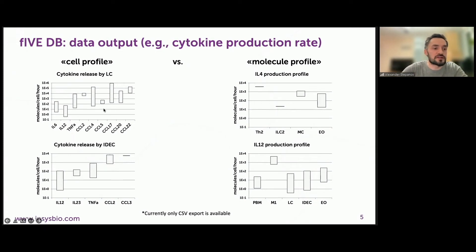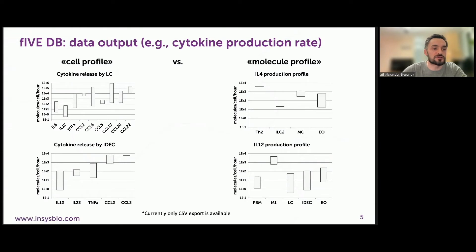On the left side, a cell-centric overview is shown where all secreted cytokines are gathered for a distinct cell type, LC or IDEC. On the right side, a molecule-centric representation allows us to compare cytokine production rates among different cells.